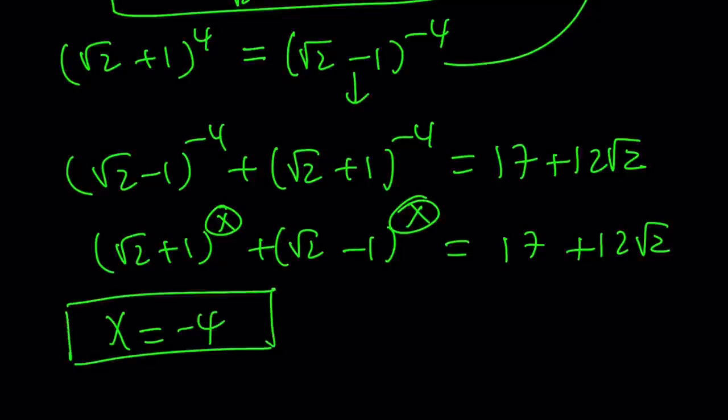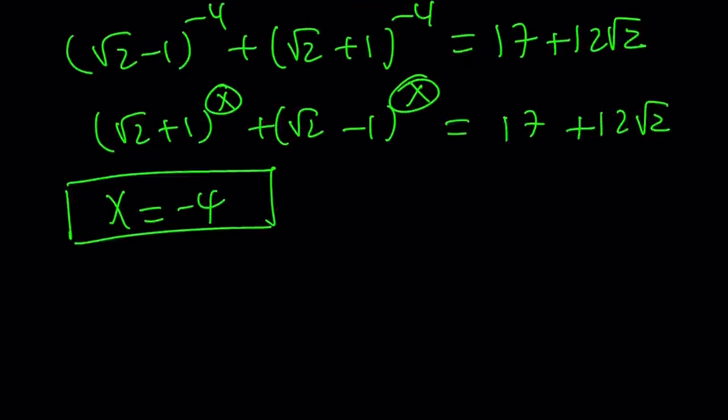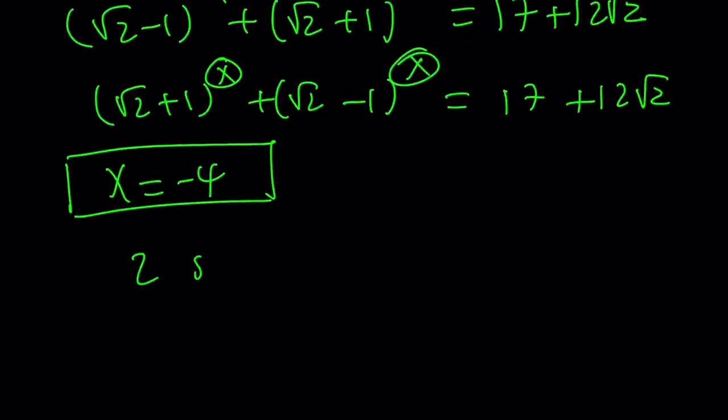Make sense? In other words, we have two solutions for this equation. And the solution set is just going to be negative 4 and 4 together. All right? Hopefully, that makes sense.